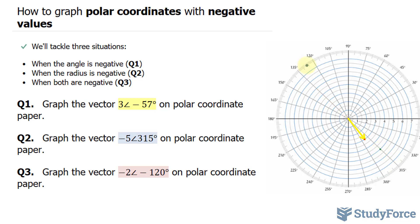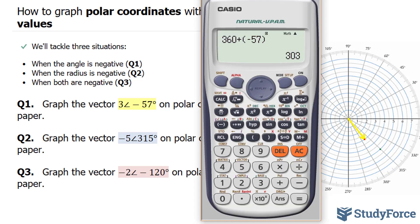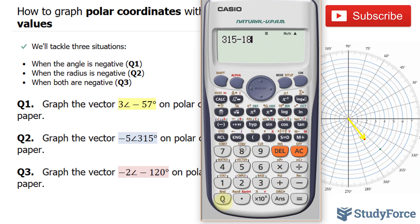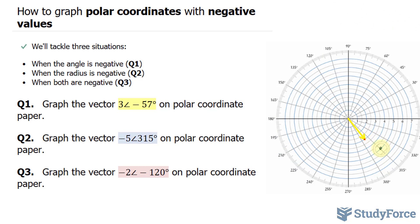So how do we find precisely where that is? What you do is you take your angle, 315, and either subtract 180 or add 180. If you want an angle between 0 and 360, in this case we'll have to subtract 180 from 315. That gives us an angle of 135. So our point will be at radius 5 and 135 degrees.